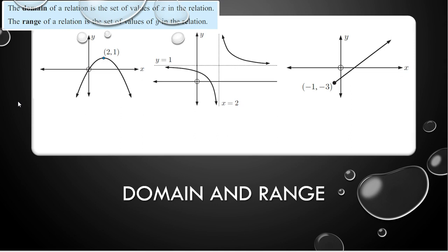We go first with the domain. For this example I have here, the domain — I will write it as domain — all values of x. Or I can use this notation: x such that all set of x, all values of x, such that x is an element of real numbers.